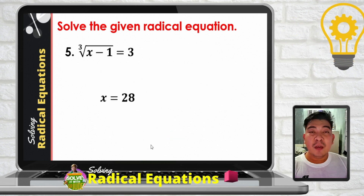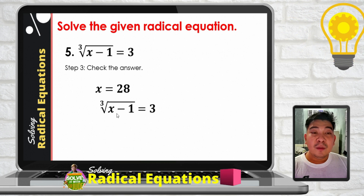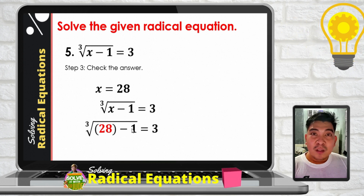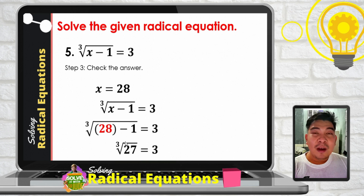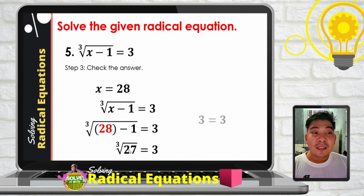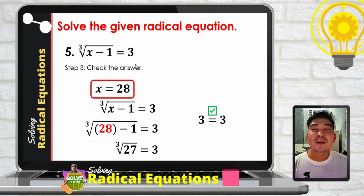Step 3: check the answer by substituting x equals 28 into the original equation. We get the cube root of 28 minus 1, which is the cube root of 27. Since 27 is a perfect cube, the cube root of 27 is 3. Both sides are equal, so x equals 28 is a valid solution to the radical equation.